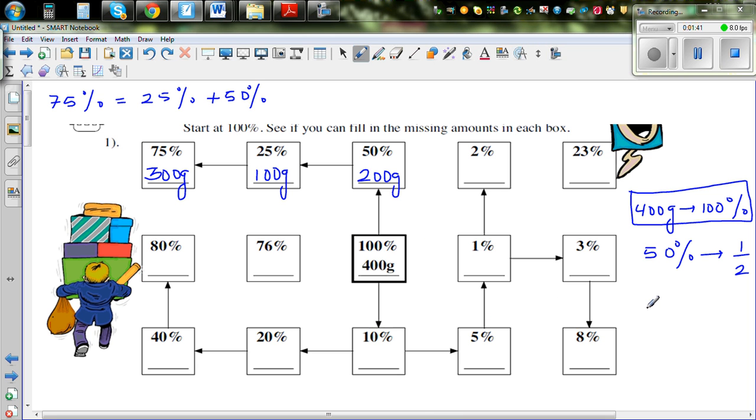Now can we find 10%? 10% as a fraction is 10 out of 100, which is 1 tenth. If you find 1 tenth of anything, you are finding 10%. So 400 divided by 10, or 1 tenth of 400, is 40 grams.